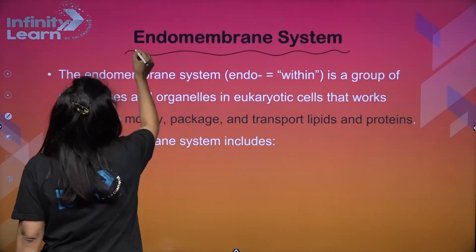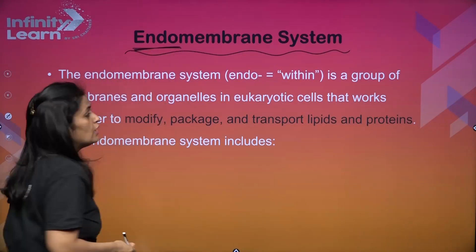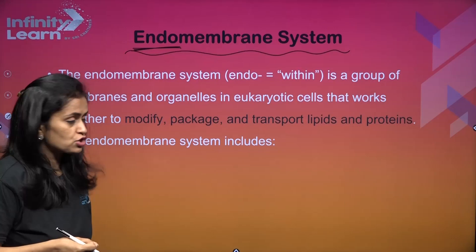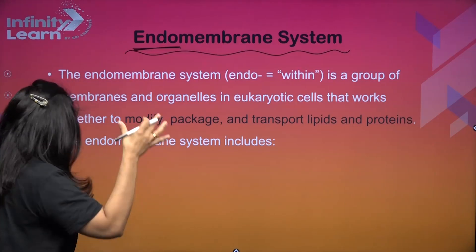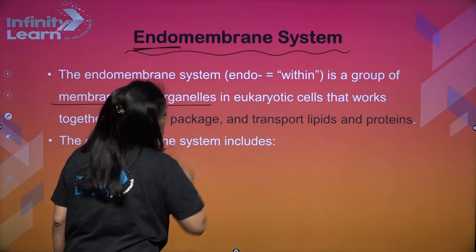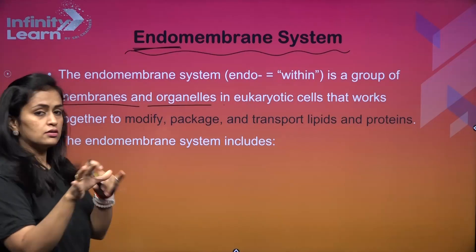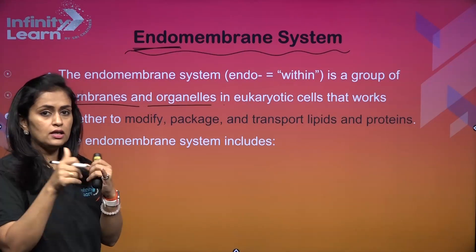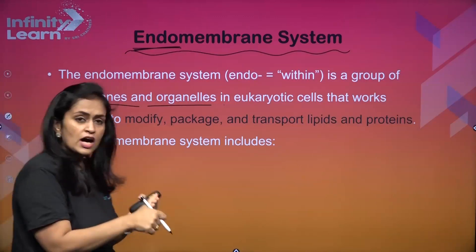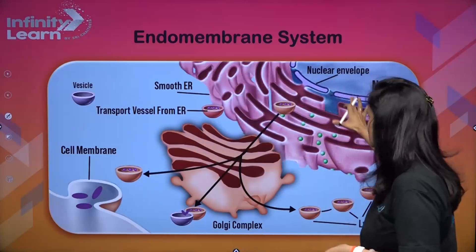Two words to note here: 'endo' means 'in' — within membrane — which refers to membrane-bounded structures. So it is a group of membranes or organelles in eukaryotic cells. What do they do? Lipids and proteins undergo modification, packaging, and transport. That is called the endomembrane system.